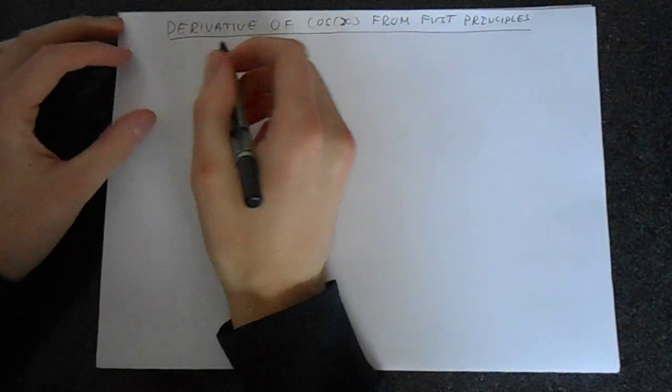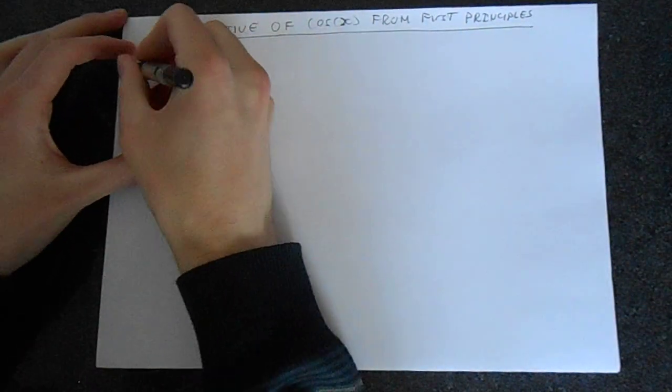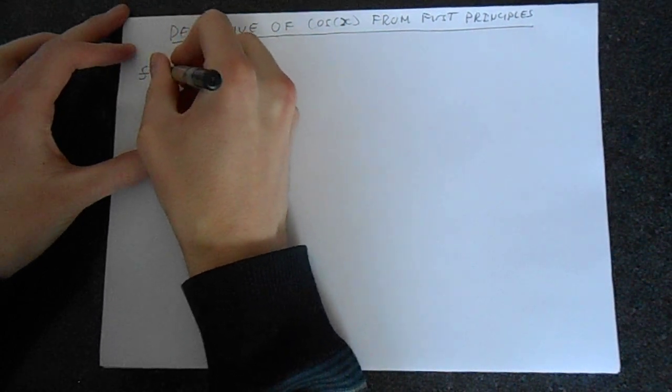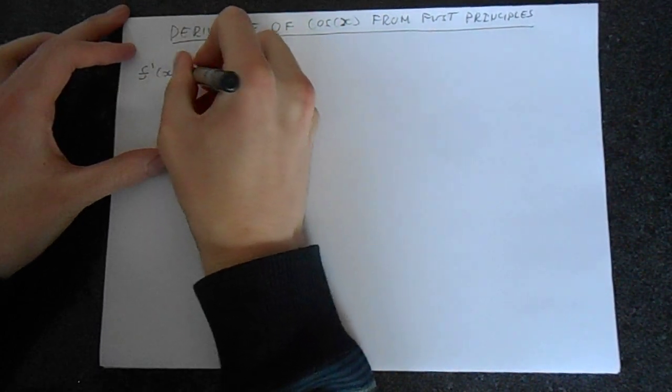So let's start by looking at what first principles actually means. This is where we find the derivative, f dash of x, the derivative of the function f of x.